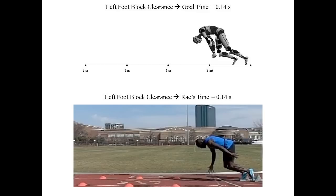Next, we will look at the left foot clearing the rear block. The gold medal goal time is to clear the rear block in 0.14 seconds, and Ray hits this time exactly. Most of his lower body and torso angles look pretty similar to the model, although there are some slight differences with the arms.